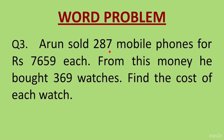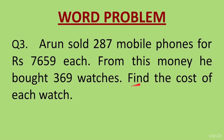Question 3. Arun sold 287 mobile phones for Rs. 7659 each. From this money he bought 369 watches. Find the cost of each watch. First, find the total money he got by selling the phones: 287 multiplied by 7659. That is the total money from selling phones. Then, since he bought 369 watches with that money, divide the total money by 369 to find the cost of each watch.